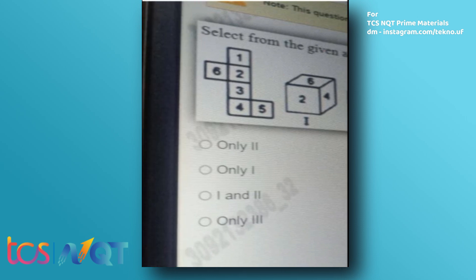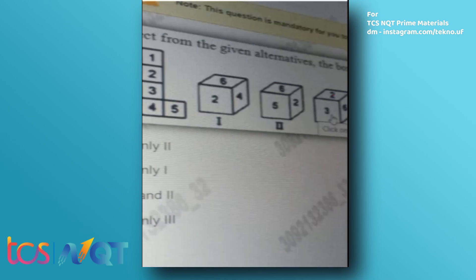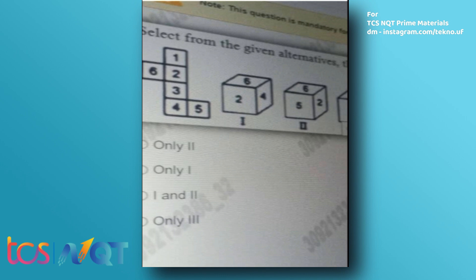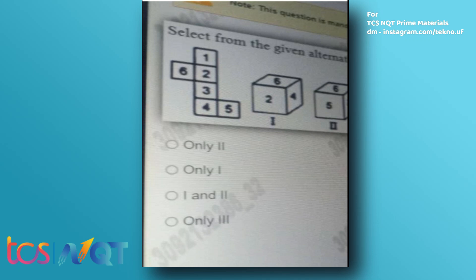The next problem is a net/unfolded-dice problem. I hope you will pause and give me the answer in the comment section. The problem statement is: which of the boxes can be formed by folding the given figure? Our task is to find which foldings are possible. First, we pick the opposite pairs: one is opposite to three, and two is opposite to four, as they are third elements to each other. Five and six are also opposite to each other.